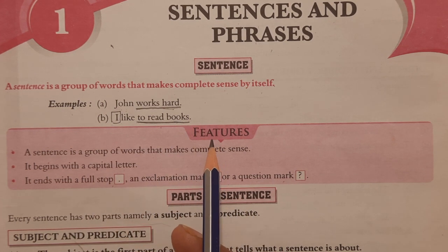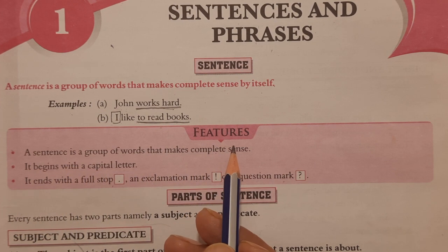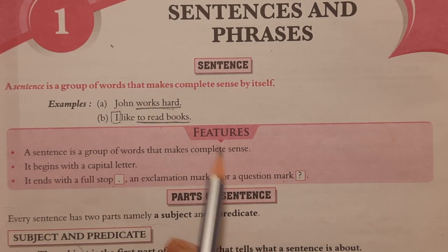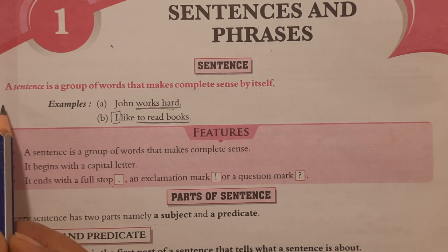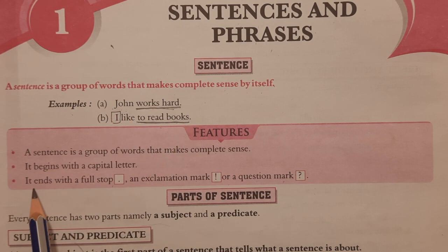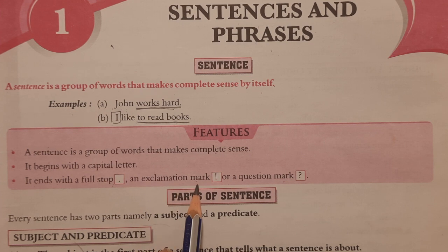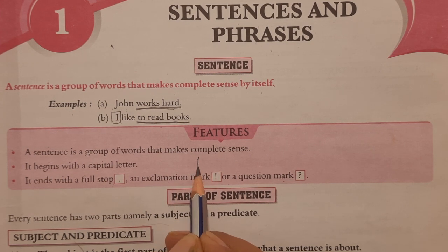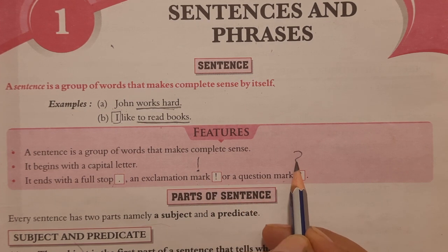There are a few features of a sentence. It is a group of words that make complete sense — that we have already learned. It begins with a capital letter. And it ends with a full stop. It can also end with an exclamation mark or a question mark.